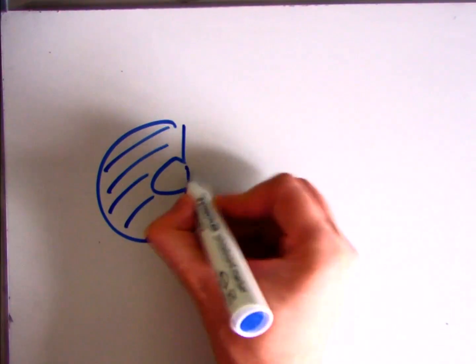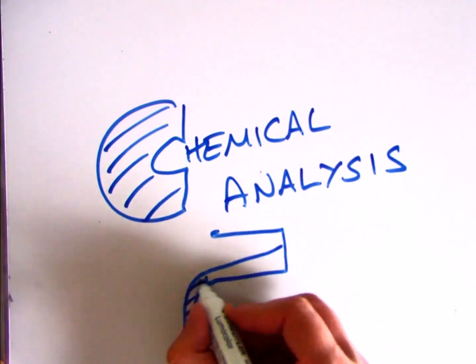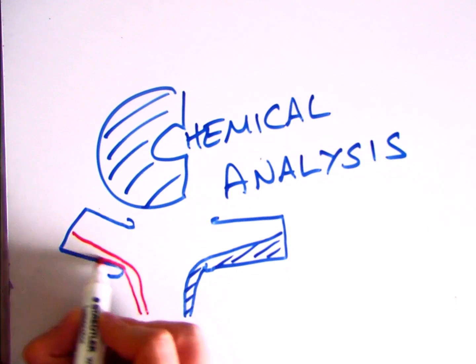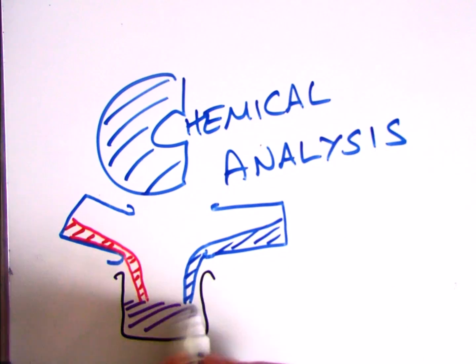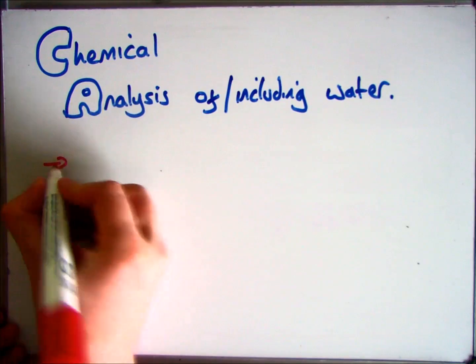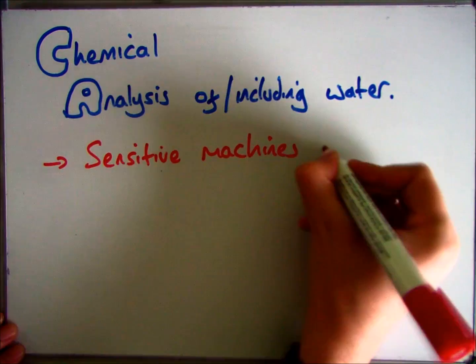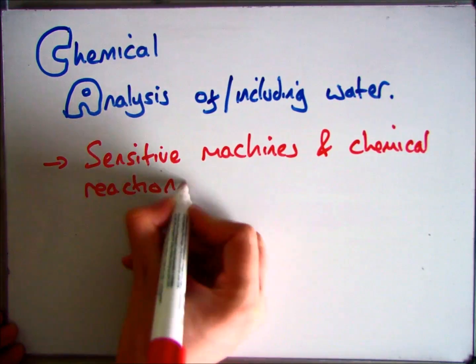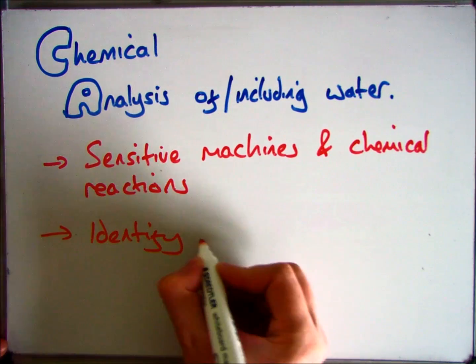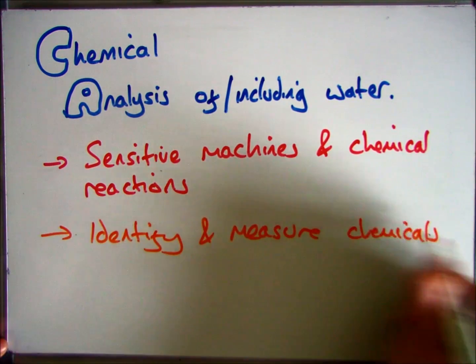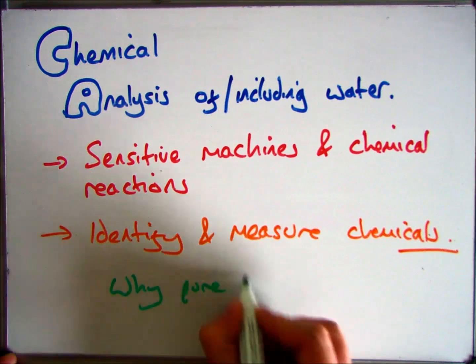The second part of this video is to have a look at chemical analysis and why chemists need to have pure water to be able to carry out analysis on different chemical compounds. One of the key things that chemists do is using sensitive machines and chemical reactions to identify or measure the different substances in the world. So why do we need to use pure water in this analysis?